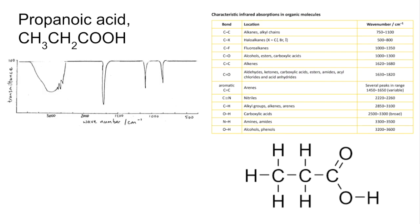The last one we'll look at is propanoic acid. Looking at the displayed formula, we've got C-H, C single bond C, C double bond O, C single bond O, and O-H. Going from left to right we've got the O-H of a carboxylic acid now. You can see it's a very broad absorption and it starts sort of below 3000 and goes up to about 3300. You can see there: 2500 to 3300, broad.